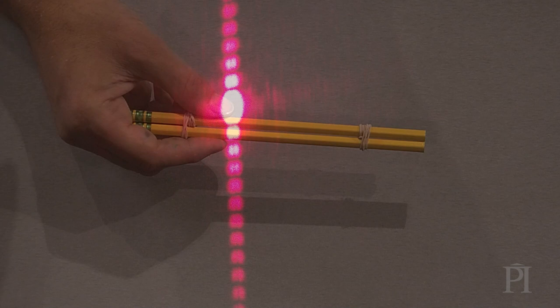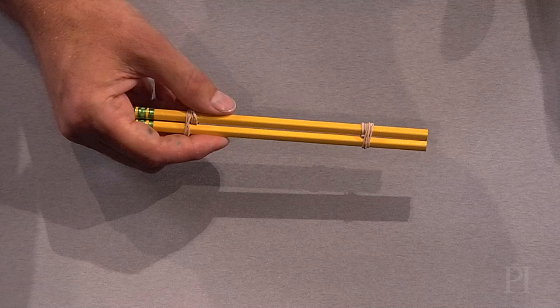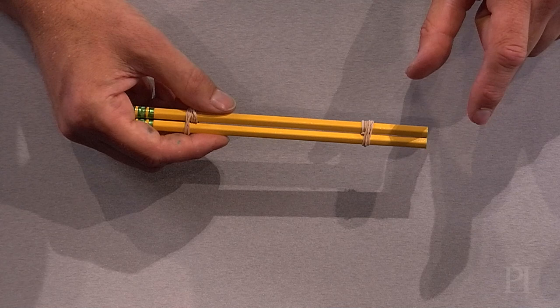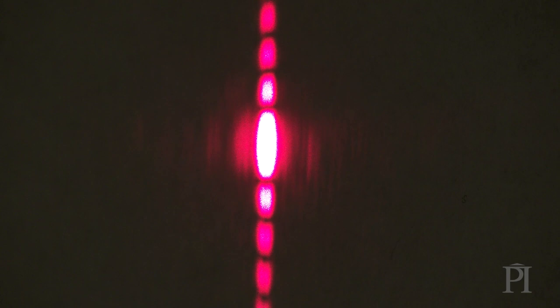The size of the gap between the pencils is the uncertainty in the position of the photons making up the laser beam. And the height of the central spot is actually the uncertainty in the photons' momentum. The inverse relationship between these two quantities is an example of Heisenberg's uncertainty principle.